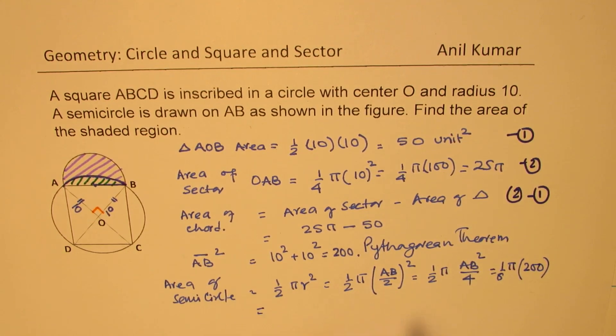So area of this semicircle is basically 1/8 of π times 200. So dividing by 8, if you divide 200 by 8, you get 8 times 2 is 16, and then 40 is 5. So it is 25π. So that becomes the area of semicircle.